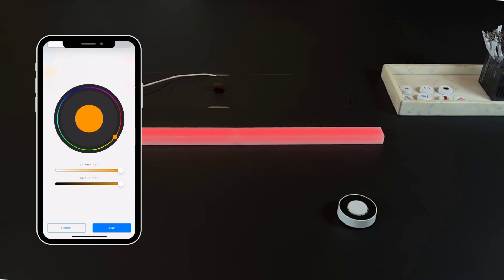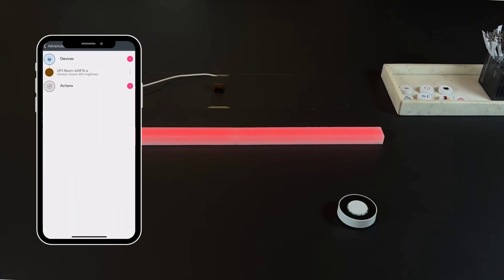Here, we will dim the light to a less bright orange. You will need to follow the same procedure and press Done so the action is saved.